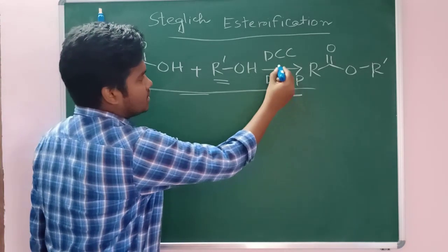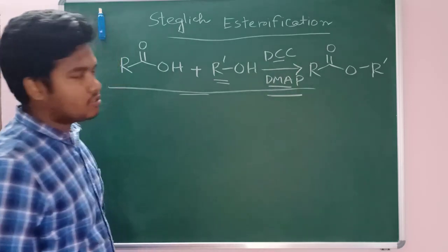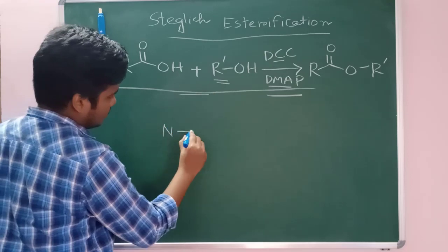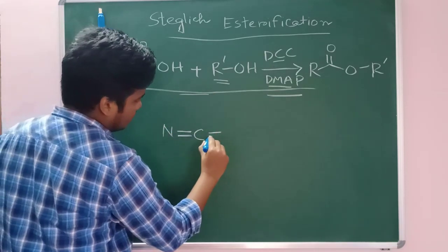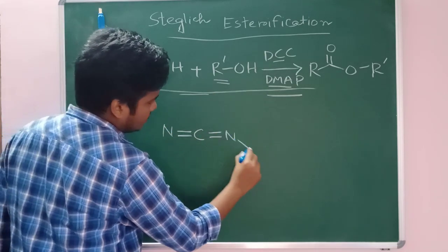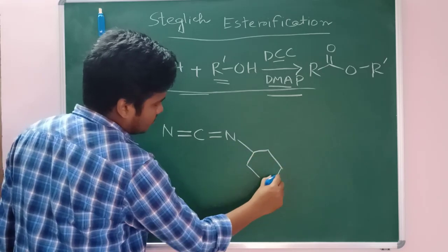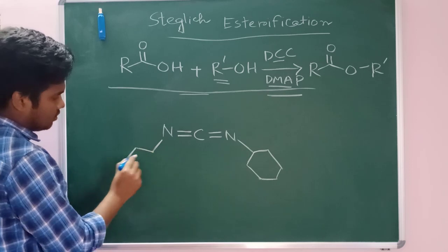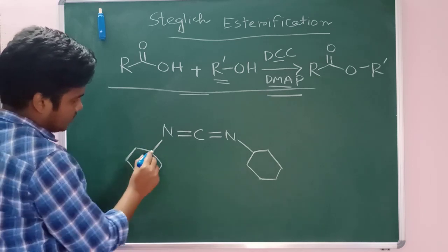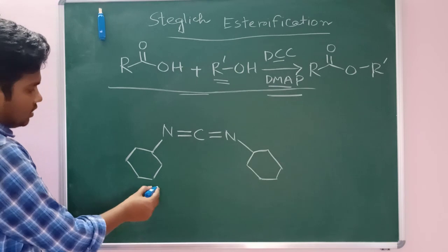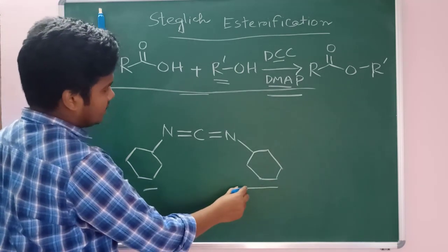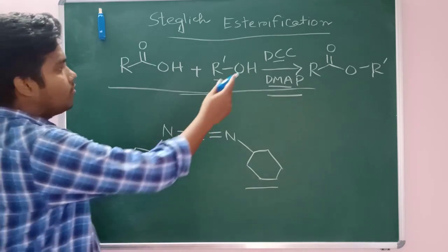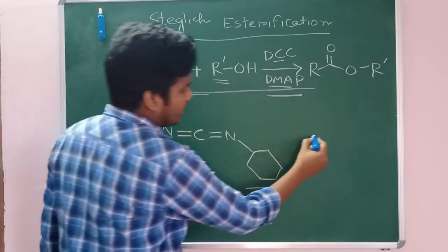First I will introduce what is DMAP and what is DCC, then I will show the mechanism. The structure of DCC is this one. So this is Dicyclohexyl-Carbodiamide, the name of this, and the full form of this is this one.